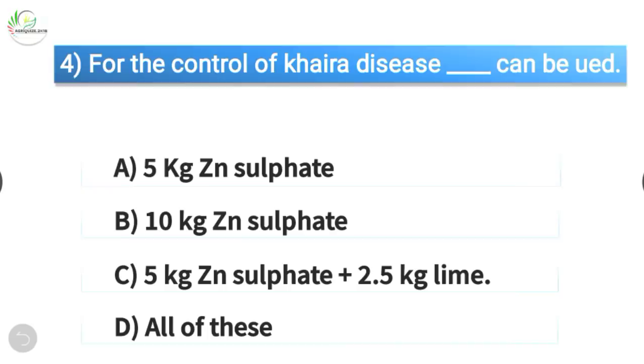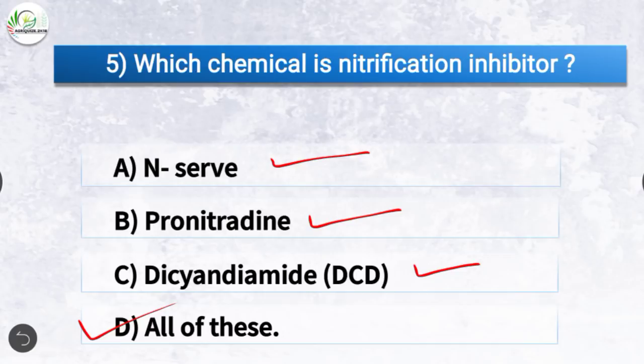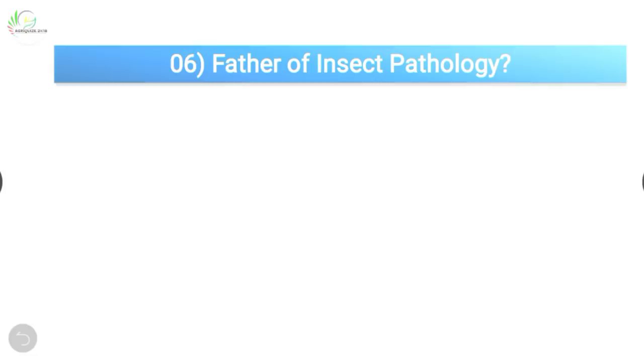Question number five: Which chemical is a nitrification inhibitor? The correct answer is option D, all of these — which includes nitrogen, sulfur, pronitradine, and DCD. All three are nitrification inhibitors.